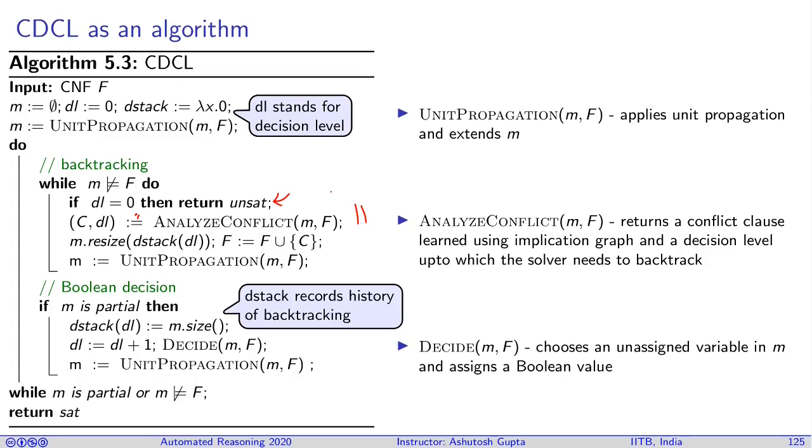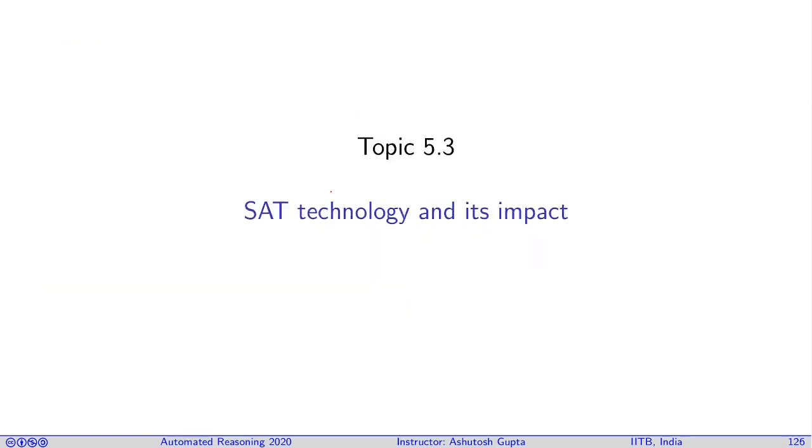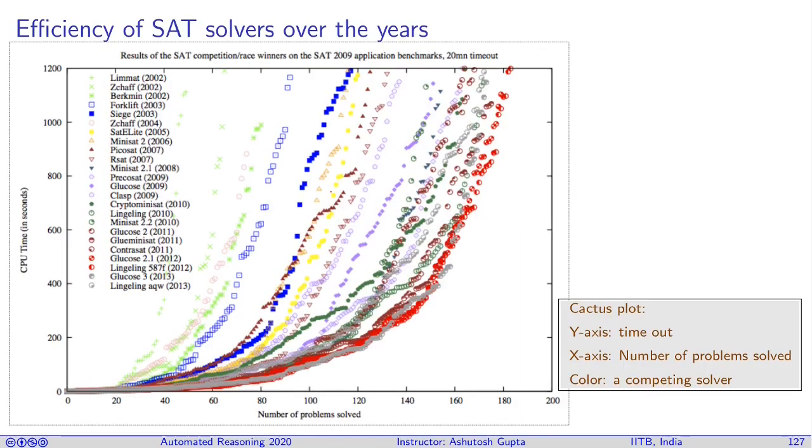CDCL was invented in the early 2000s. Since then, the technology has evolved. A satisfiability competition started where every year, different research groups build SAT solvers and submit them for competition, and the best SAT solver wins. This is some analysis done around 2013. They collected solver submissions over the years from 2000 to 2013 and ran them on a benchmark.